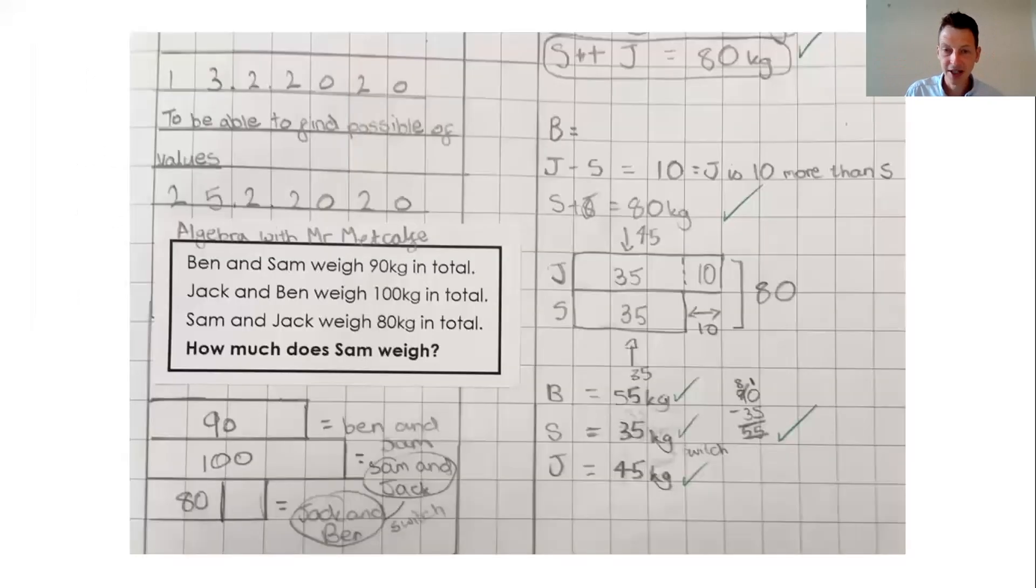And so now children start exploring. If we have a look on the right hand side, we have J subtract S equals 10. J is 10 more than S. Because if we have a look at the first two lines, they both have Ben in. But the second one, we have Jack with Ben, and that is 10 kilograms more than Sam with Ben.